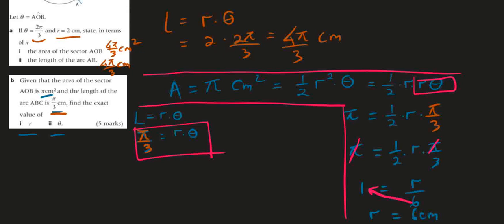So R is equal to 6 cm, and then we need to get theta. To get theta, we just use this one: π/3 equals R, which is 6, times theta. Now to get theta, I will divide π/3 divided by 6, which equals π/18. So that will be our answer: π/18.